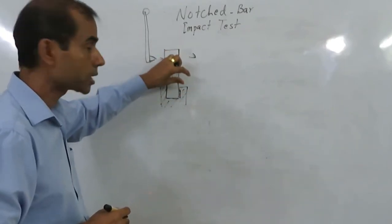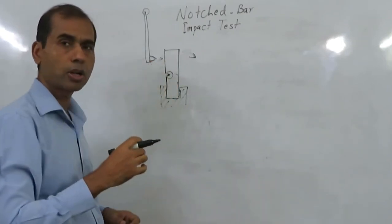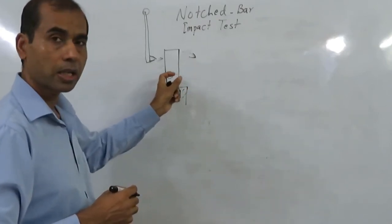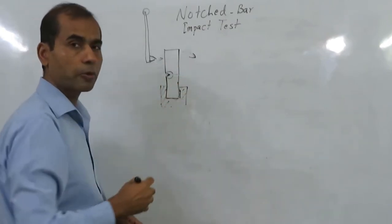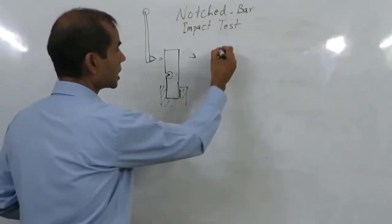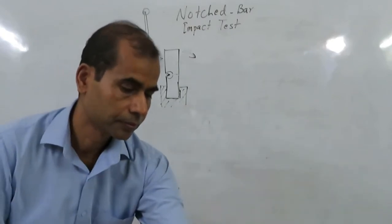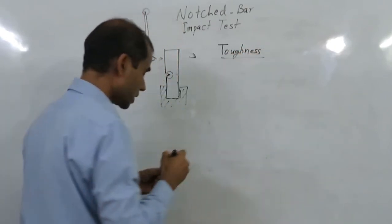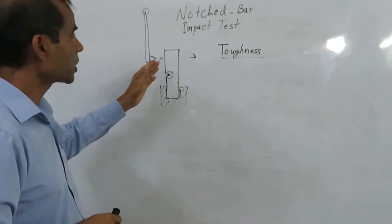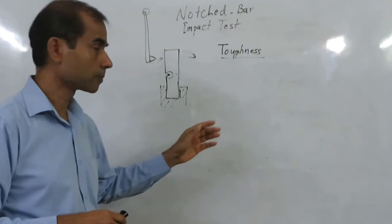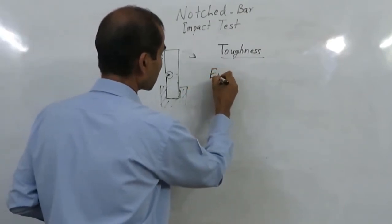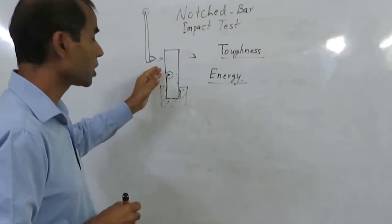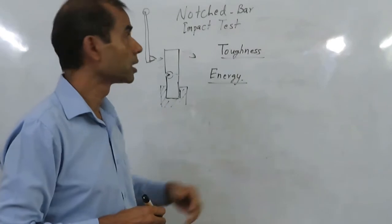For example, if you have a glass and you impact it with a very small amount of energy, it will fracture. But if you have a metal like aluminum or copper, it will consume a lot of energy before it fractures. This is the meaning of toughness. This test was used originally to find out how tough a material is, and the result was expressed as energy — specifically the energy consumed in breaking a notched specimen. That is why it is called the notched bar impact test.